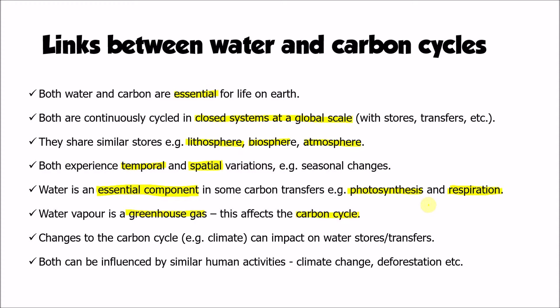Changes within the carbon cycle can also impact water stores and transfers. Any warming that results from changes to the carbon cycle through climate change could impact stores of water such as ice caps and glaciers — the cryosphere would be affected. Both cycles can also be impacted by similar human activities such as climate change, deforestation, and agriculture, all of which can disrupt the natural water and carbon cycles.